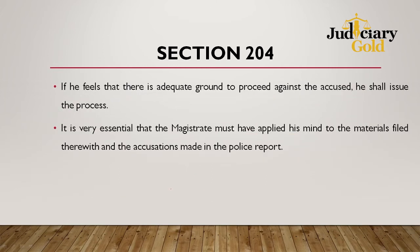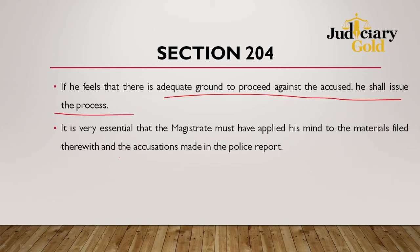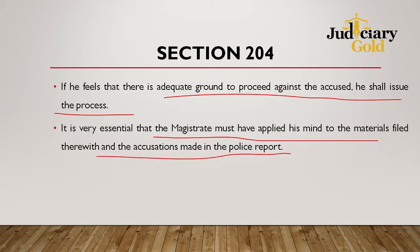If the magistrate feels there are adequate grounds to proceed against the accused, he shall issue the process. It is essential that the magistrate must have applied his mind to the materials filed — whatever witnesses come, whatever complaints come — and on that basis, if he thinks there are adequate grounds to proceed against the accused, he can issue the process.